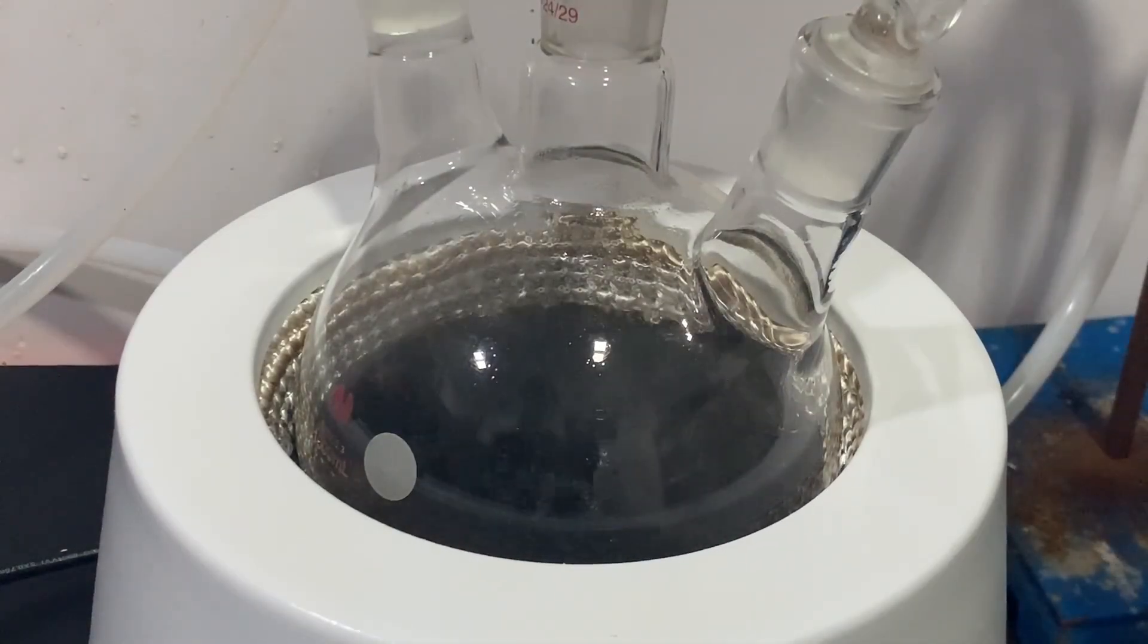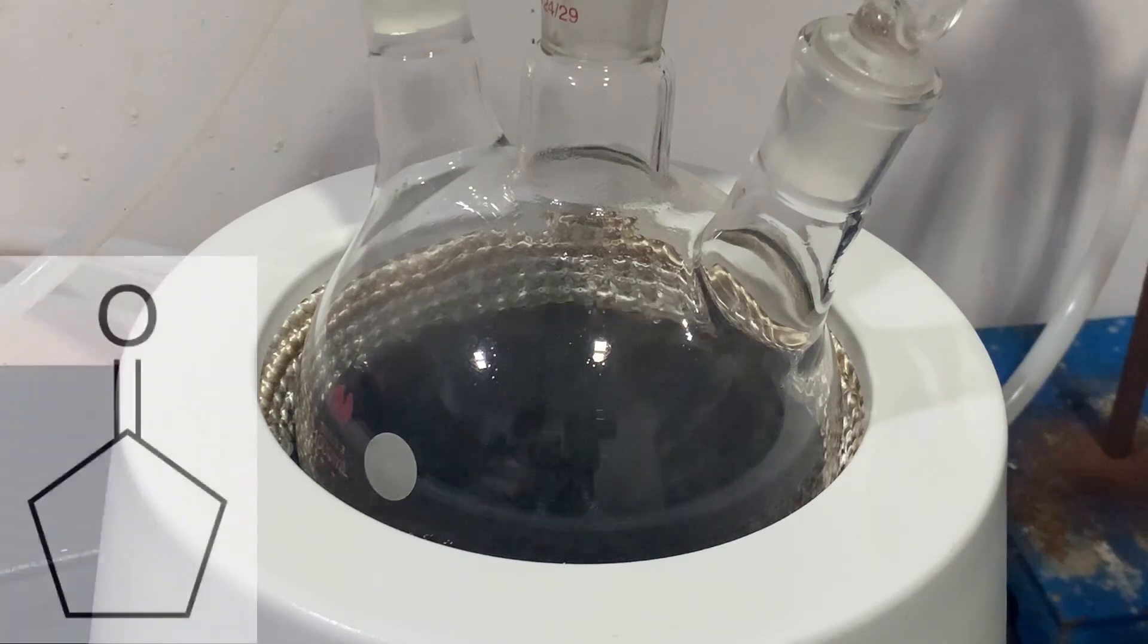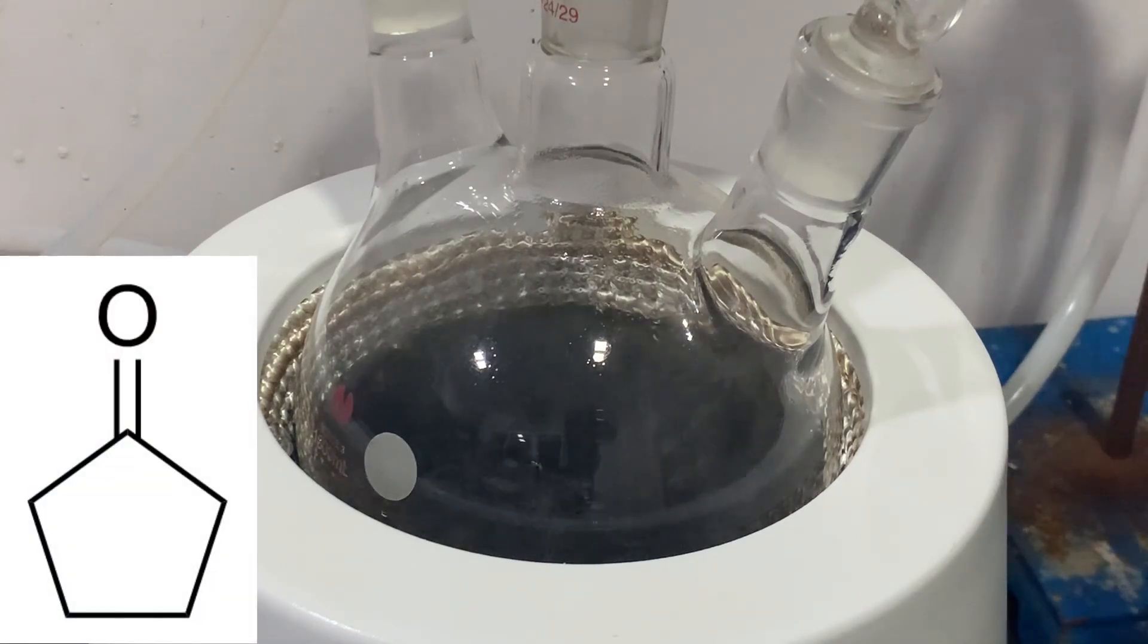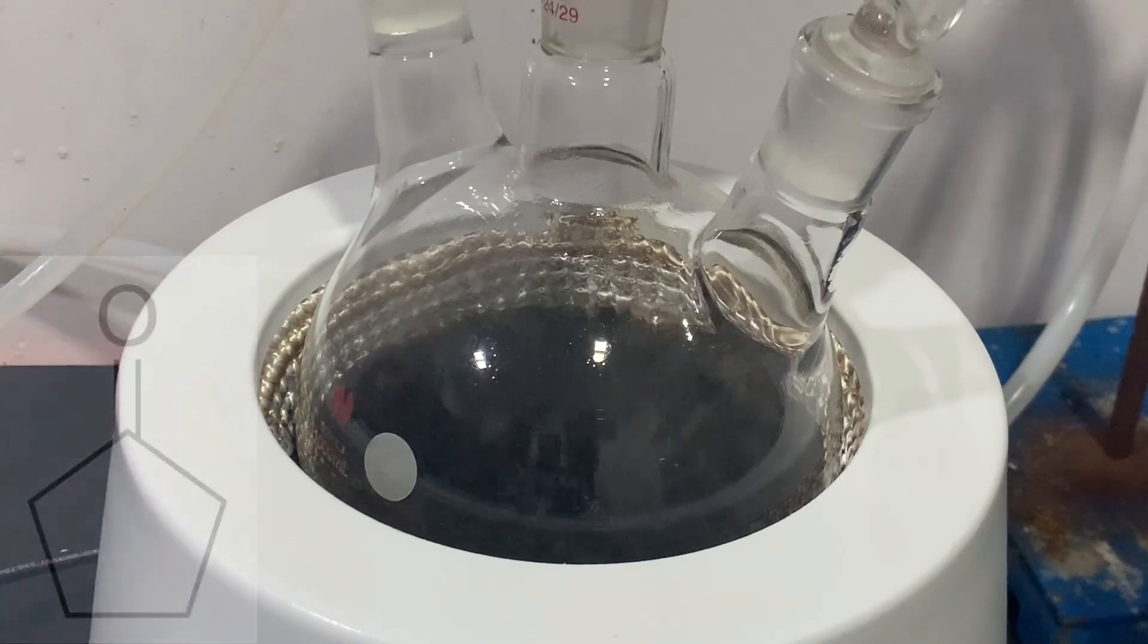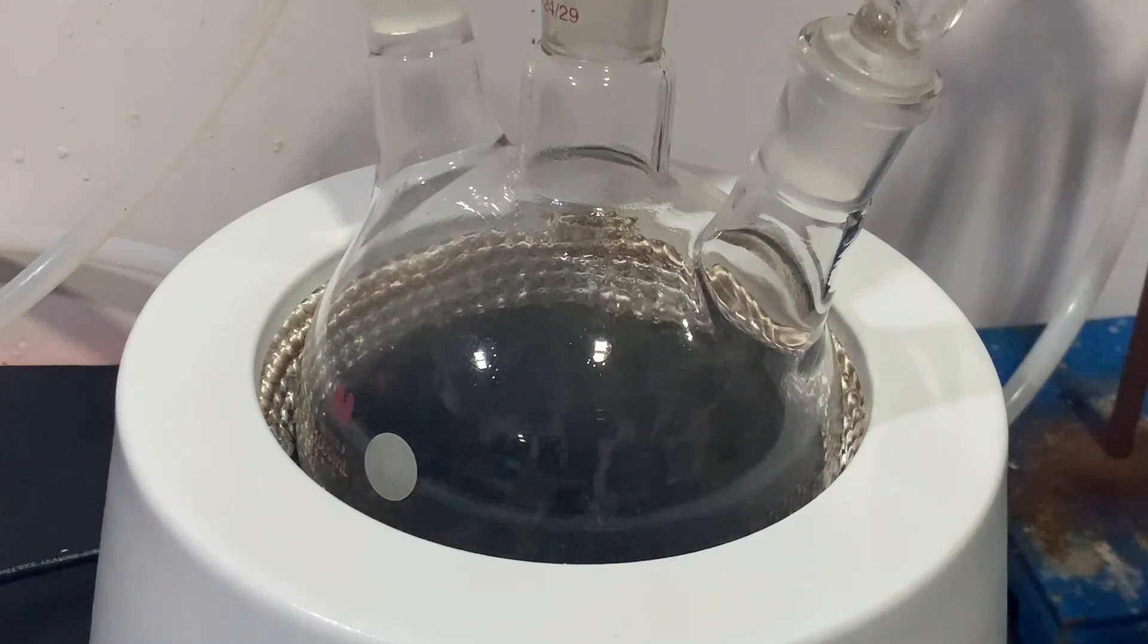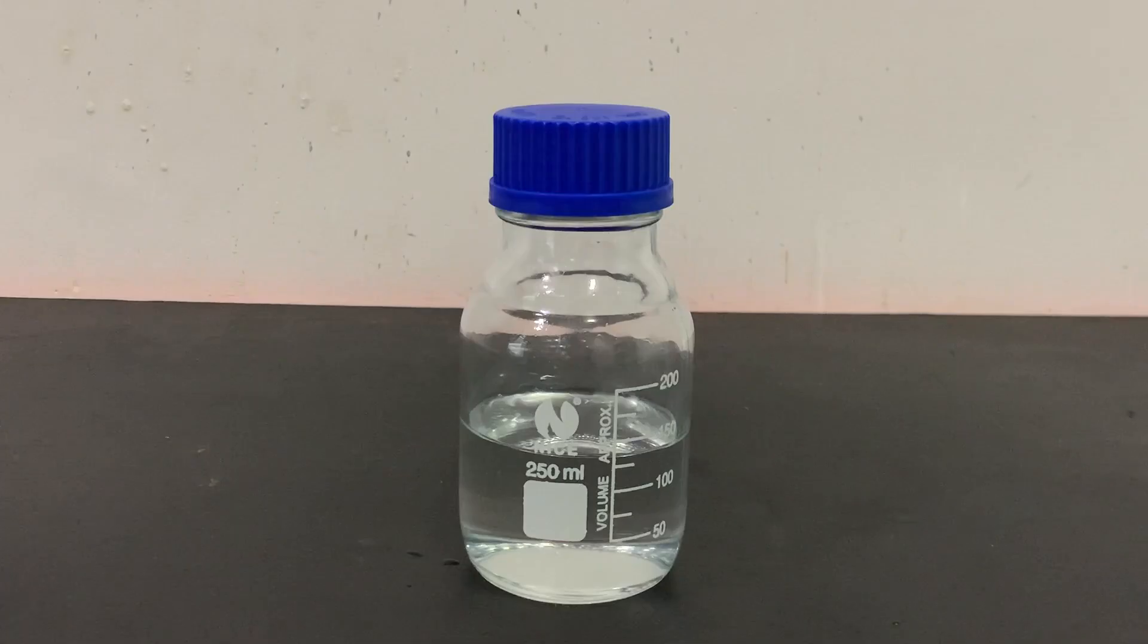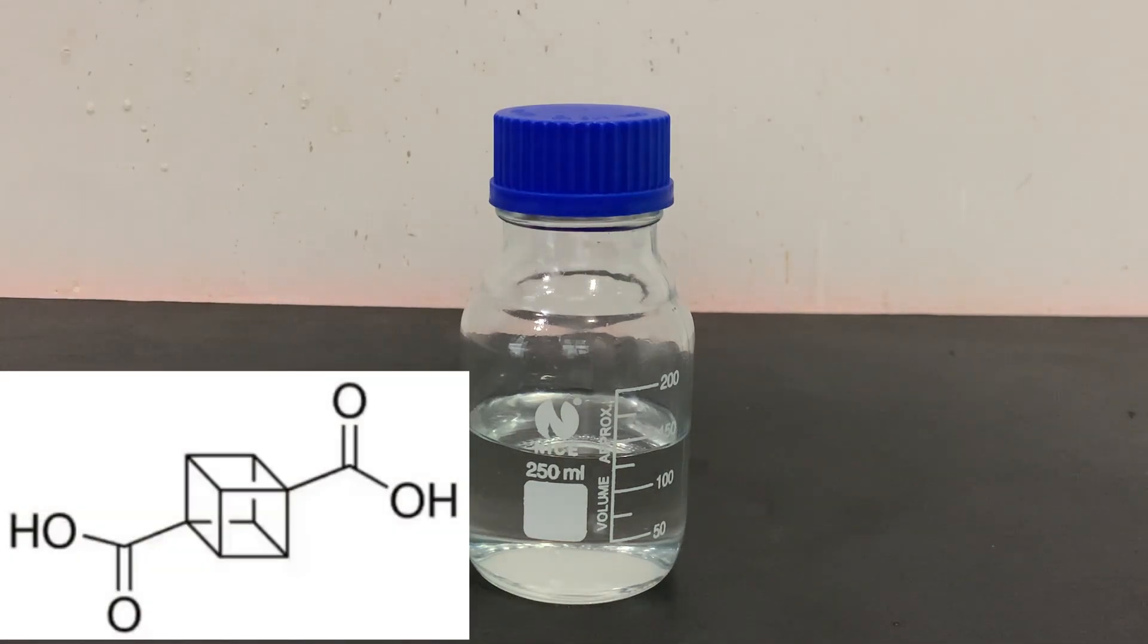In today's video, I'm going to be doing the synthesis of cyclopentanone from the decarboxylation of adipic acid. Cyclopentanone is used as a chemical building block for a variety of organic compounds. For my application, I plan to use it as the starting material for making cubane-1,4-dicarboxylic acid.